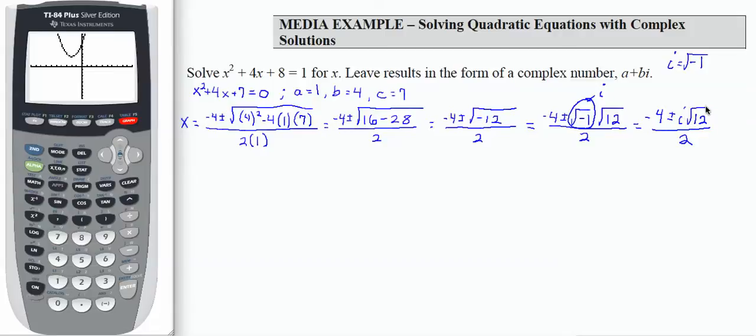Now I can continue to work with this square root of 12. I cannot reduce the 4 and 2 because I need to see if I can remove some common factor from the square root of 12 first. So 12 I can write as 4 times 3. That's the square root of 4 times the square root of 3. That equals negative 4 plus or minus, square root of 4 is 2, I'm going to move it in front of this i, times square root of 3 over 2.